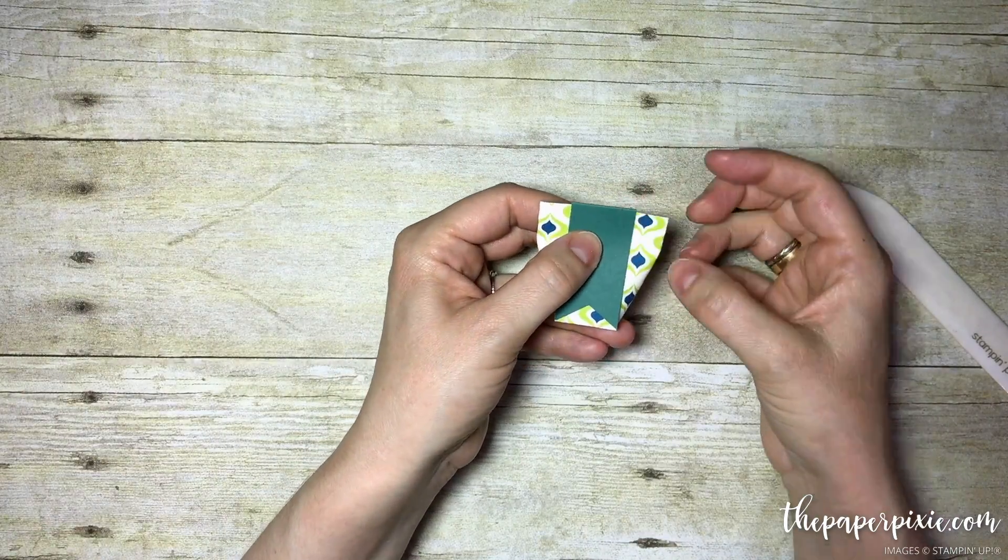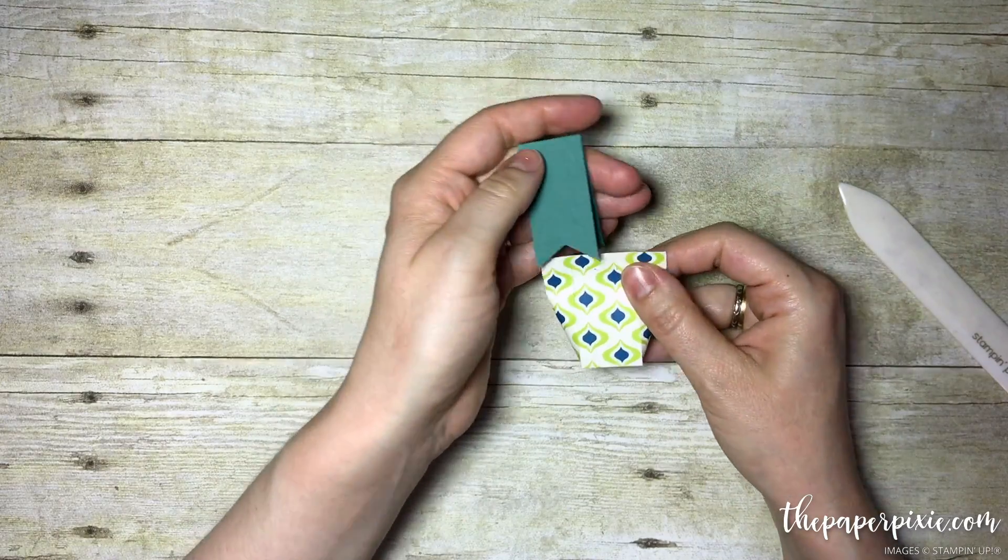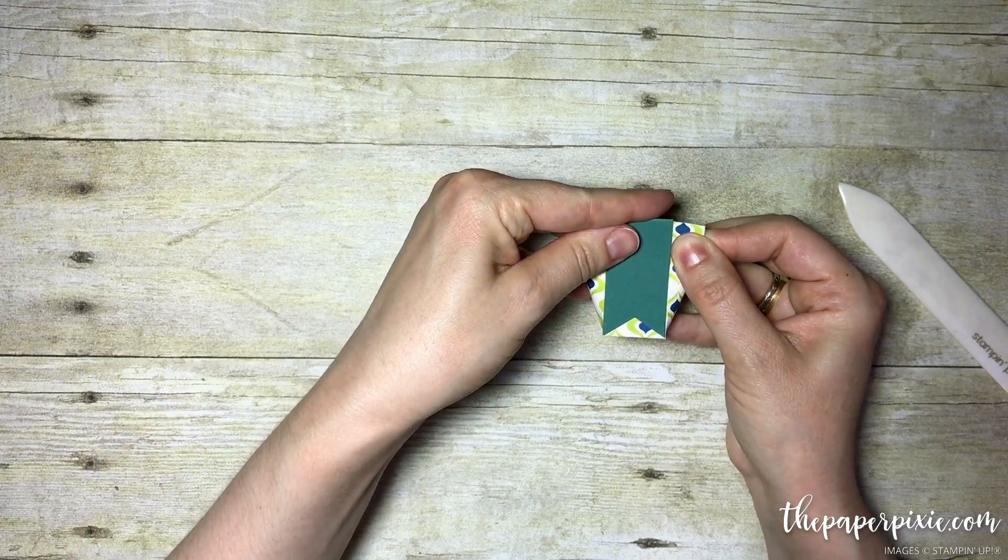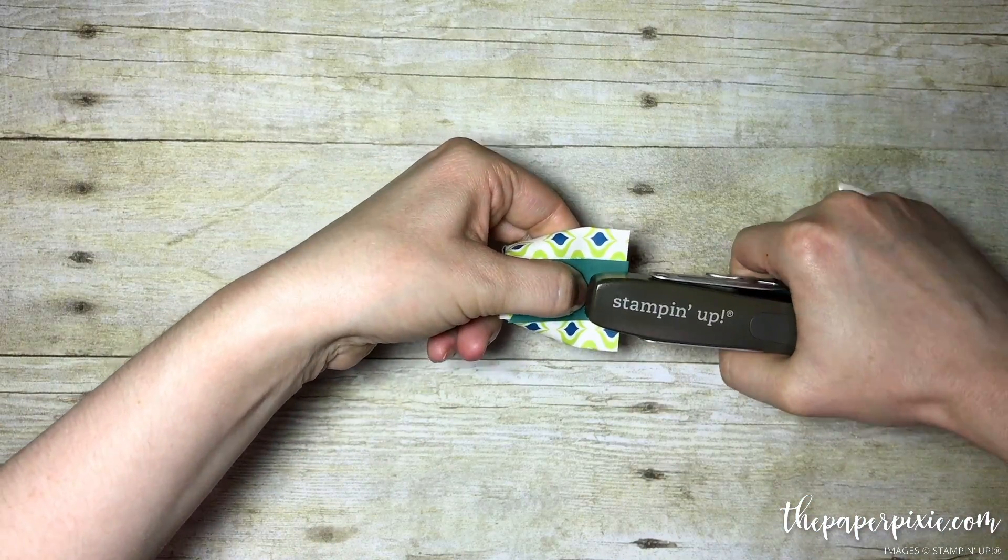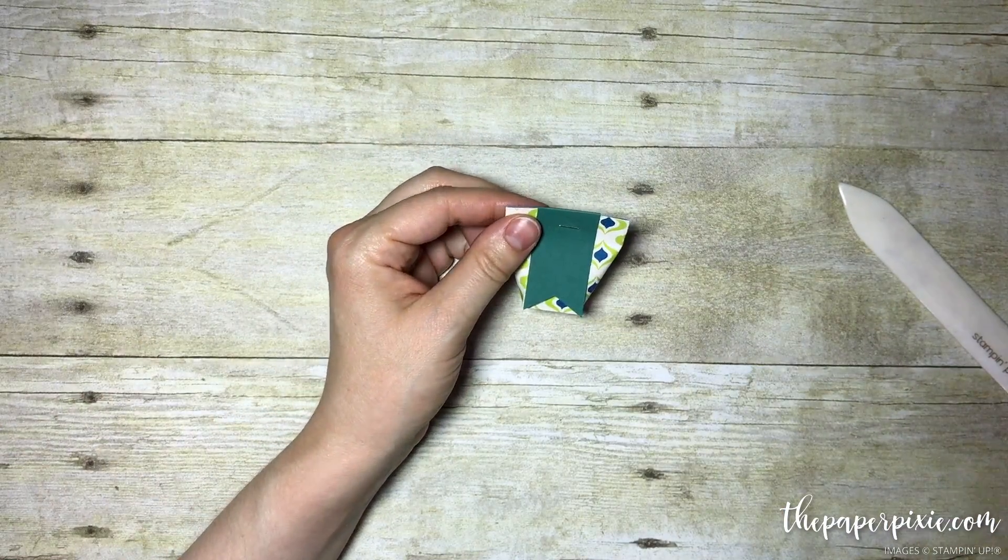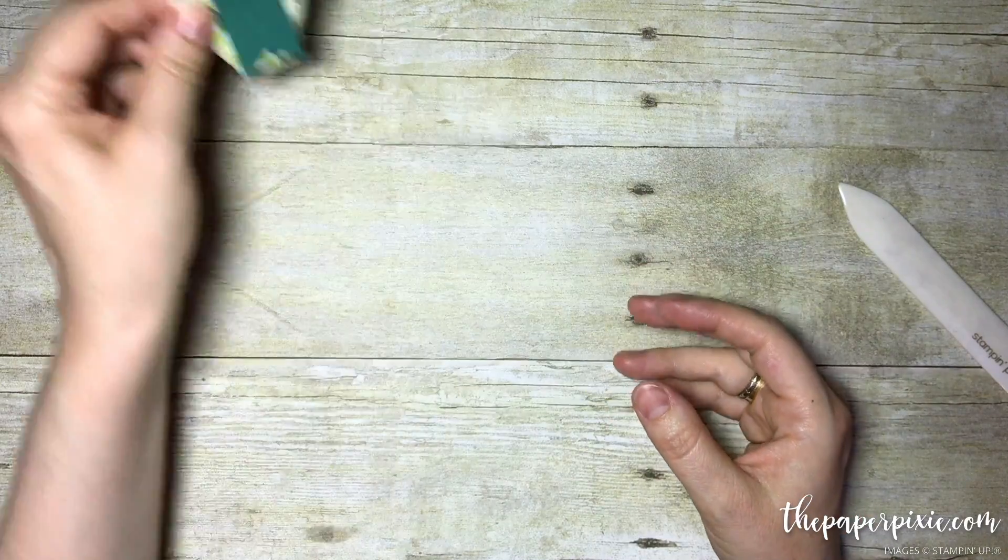Skip the first staple I did. Put the banner over the edge so it covers those score lines, and now I'm going to staple. Again, we're going to hide that ugly staple. That is the box itself, now let's work on the sentiment.